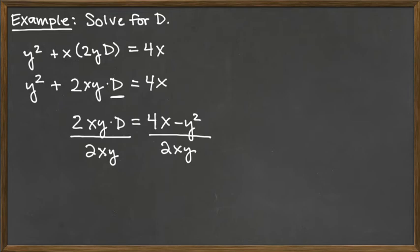So now the left hand side reduces out to give us just the d isolated by itself, just like we wanted it to be. And then on the right hand side, we've got 4x minus y squared on top all over the 2xy.